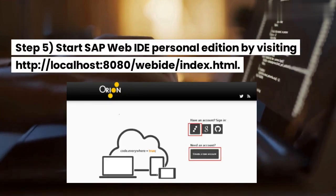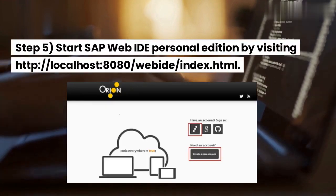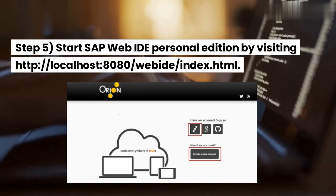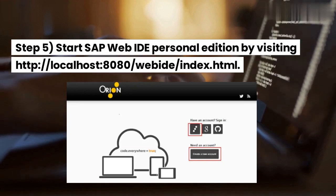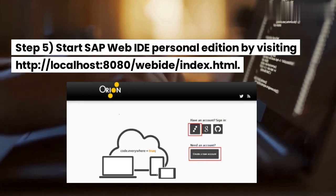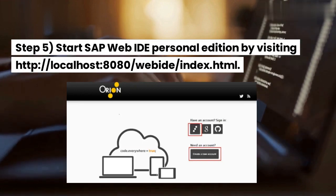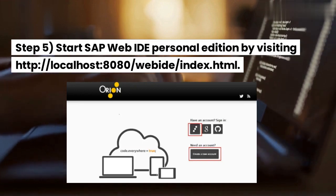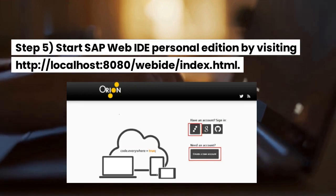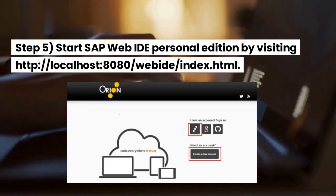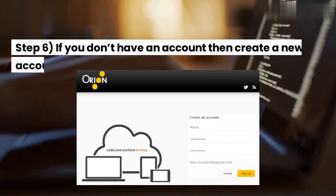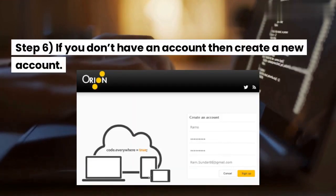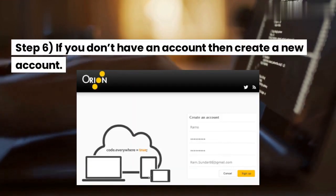Step 5: start SAP Web IDE Personal Edition by visiting http://localhost:8888/webide/index.html. Step 6: if you don't have an account, then create a new account.